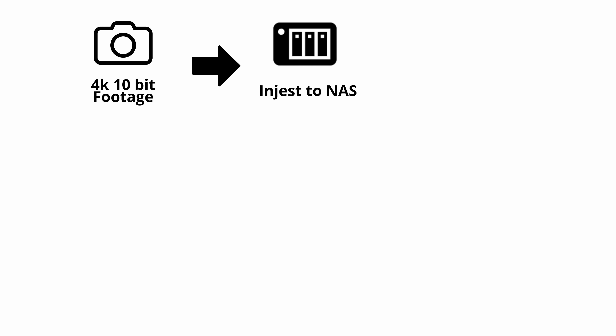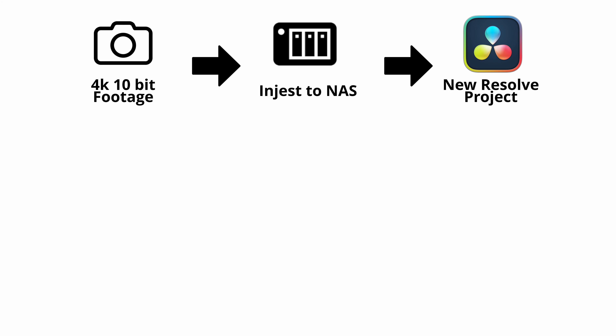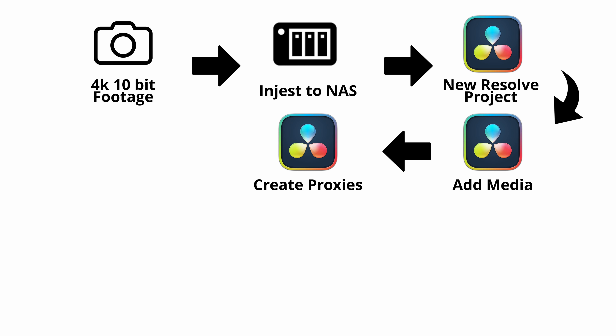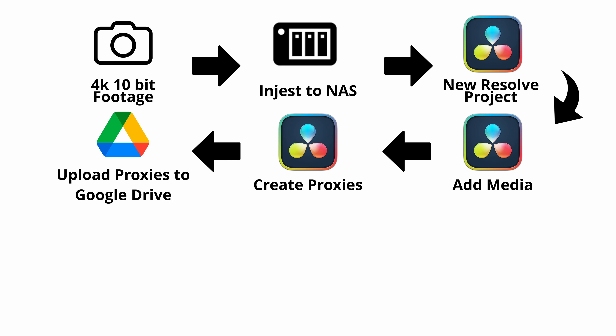Here is a basic layout of how this works, and I'll go through each step in detail later. I shoot my high-resolution footage, typically 4K 10-bit Sony footage on an FX3. I ingest that footage to my NAS — my network attached storage device — and then create a new project in DaVinci Resolve. I'll add my media to Resolve, create proxies, and then upload those proxies to Google Drive.